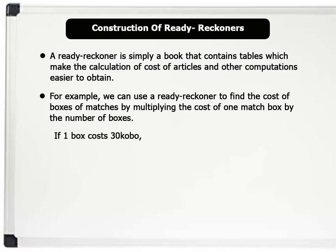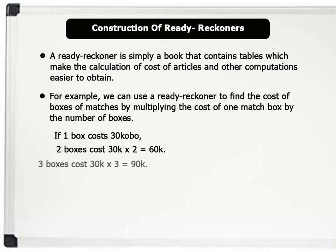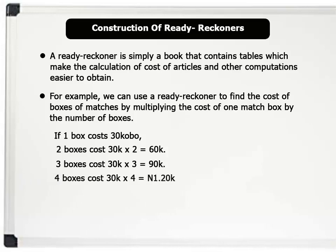If one match box costs 30 colbo, 2 boxes will then cost 30 colbo times 2, which equals 60 colbo. 3 boxes cost 30 colbo times 3, which equals 90 colbo. 4 boxes cost 30 colbo times 4, which equals 1 nara 20 colbo.